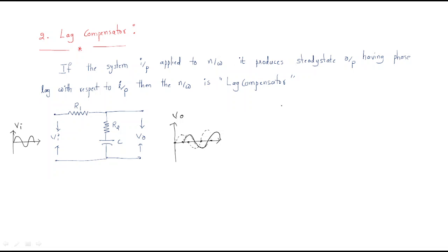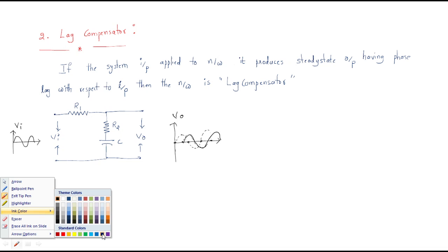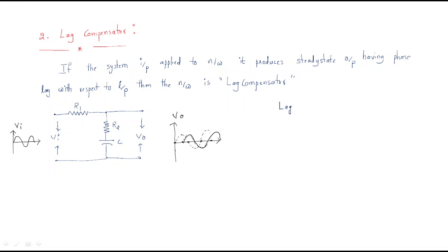An important thing: the lag compensator is nothing but a low-pass filter. Wherever we use a lag compensator, it simply acts as a low-pass filter — it allows only low-frequency signals. The lead compensator, by contrast, is a high-pass filter. A shortcut: lag has three letters, and so does low — three letters each.